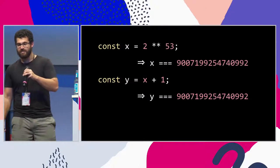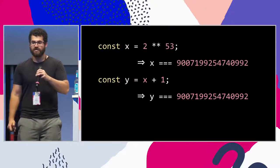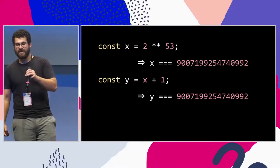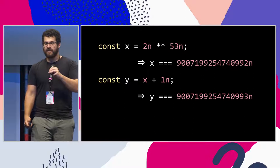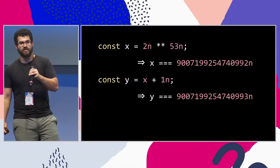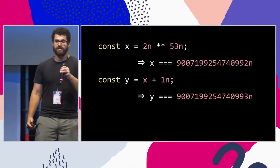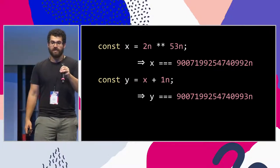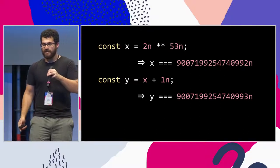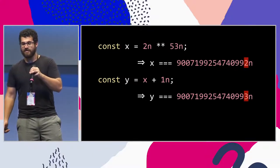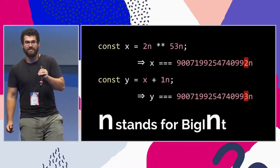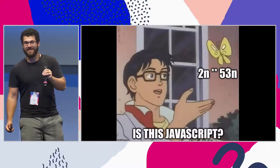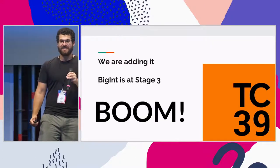So what if we had this in JavaScript itself? Going back to the original example where we add one and get the same number back, what if we could indicate that we want to refer just to integers using a suffix like N? So 2n ** 53n would be the same number starting with a 9 and ending with a 2, but when you add 1n to it, you would get a 3 at the end. N here stands for BigInt. What is this, JavaScript? It is. Soon.